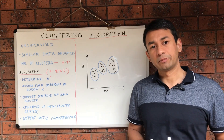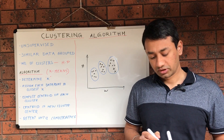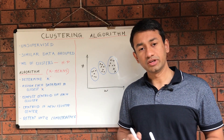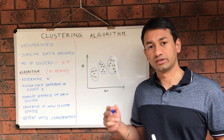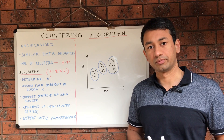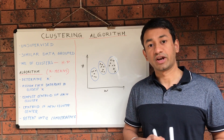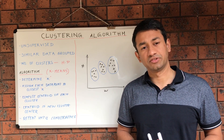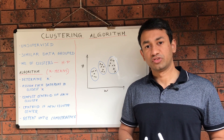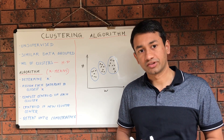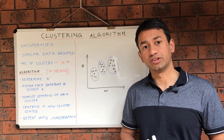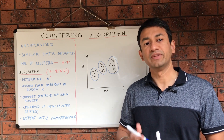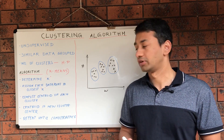The third important thing is how do we come up with the number of clusters? In the clustering algorithm, the number of clusters is a hyperparameter, which means that it has not been derived from the algorithm as such, but it has been provided as an input to the algorithm to help in the learning process.